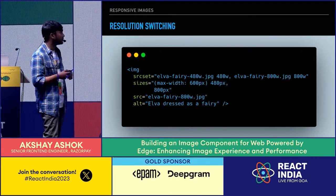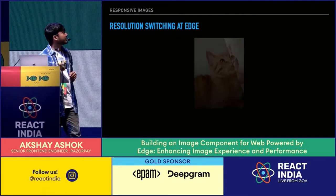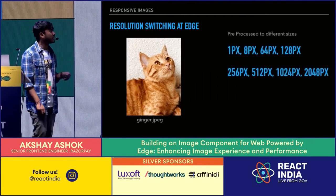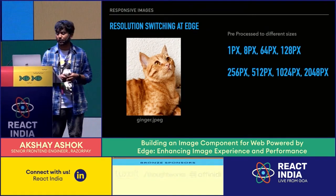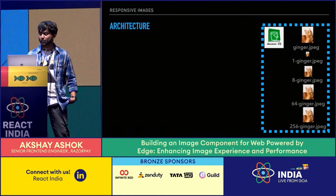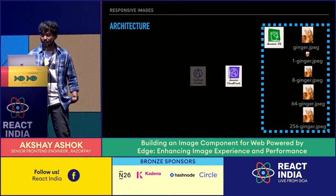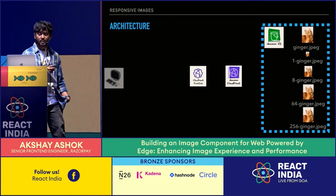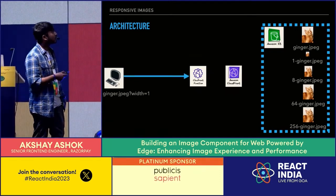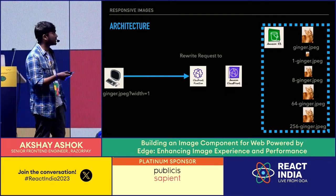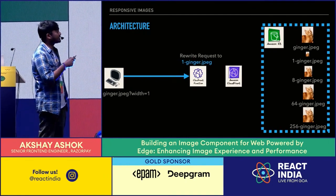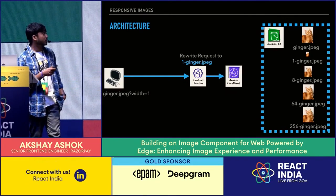For resolution switching, the same image is shown on desktop and mobile but at different sizes. Traditionally you'd use srcset and sizes attributes. Instead, let's do this at the edge: during upload, pre-process the image to multiple resolutions from 1px to 2048px. When a user requests an image with a width parameter, the CloudFront Function detects the requested width and rewrites the request to the corresponding pre-processed file, serving the appropriate size from the CDN.